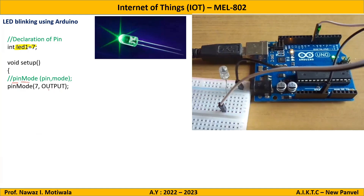What I have done here is declared pin number seven, on which our LED is connected, and that this LED will be used as output. So it is written: pinMode(7) will be considered as the output pin. This completes step two.